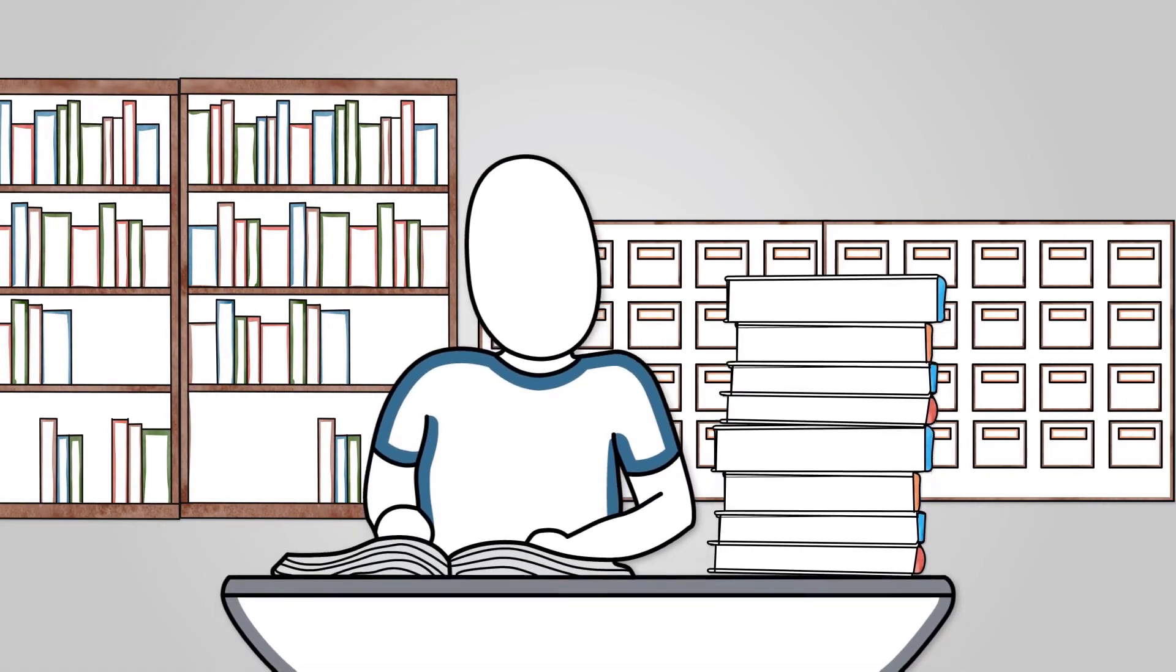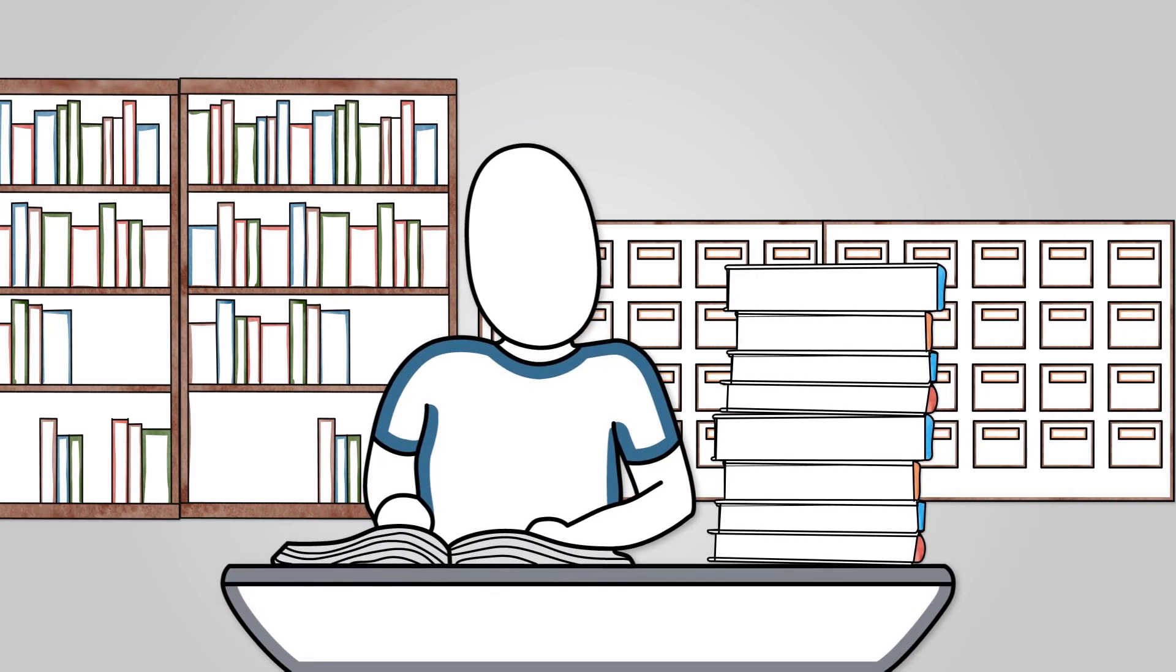Imagine you are looking for a word in the dictionary. In a linear search you would need to start with the letter A and go through each word one at a time to find the word you are looking for.